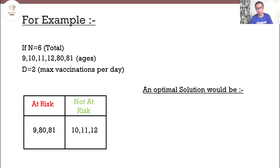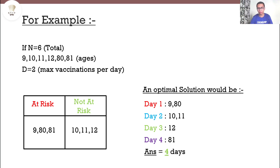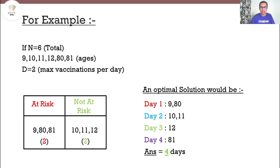An optimal solution: on day 1 we vaccinate 9 and 80, since both are at risk. On day 2 we vaccinate 10 and 11, since both are not at risk. On day 3 we cannot vaccinate 81 and 12 together, since one is at risk and one is not, so they must be done on separate days. This gives us an answer of 4 days. The at-risk category requires 2 days and the not-at-risk category also requires 2 days.